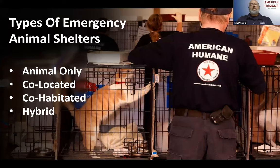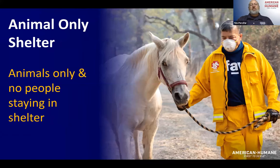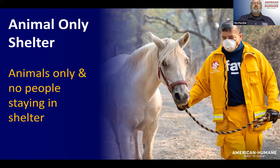We're going to be talking about mainly three different kinds of shelters and some of the advantages and disadvantages of these: animal-only shelters, co-located shelters, co-habitated shelters, and then we'll discuss a little bit about hybrids of these. The first thing I want to talk about is animal-only shelters — shelters that really only have animals, with no people inside.